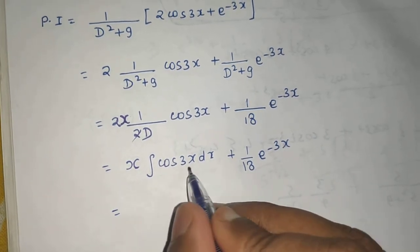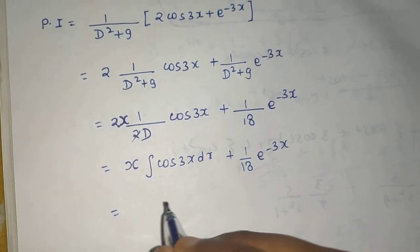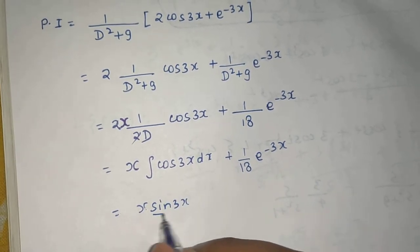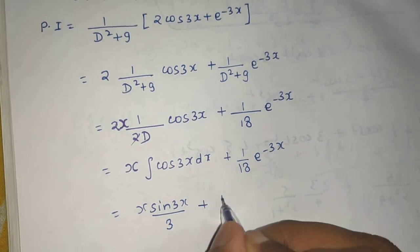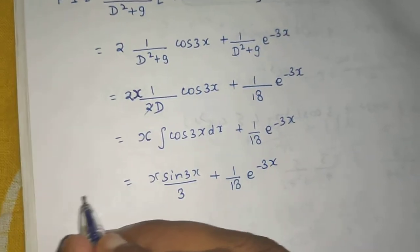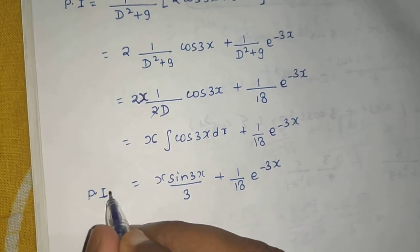So you are getting integration of cos is simply sine. So x sine 3x, and we will divide by the derivative of 3x, which is 3, plus 1 upon 18 e raised to power minus 3x. Now this was our particular integral solved.